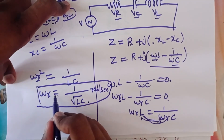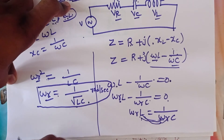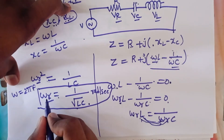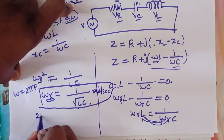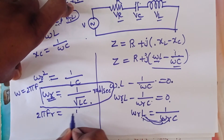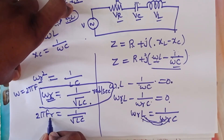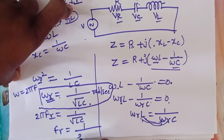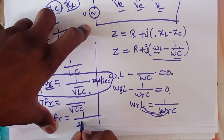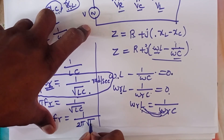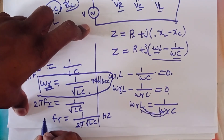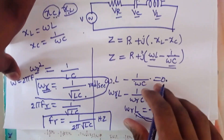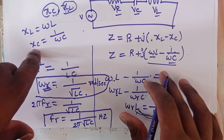Suppose we want to write this in terms of frequency in Hz. We know Omega_R equals 2·pi·F_R. Substituting gives 2·pi·F_R equals 1 divided by root(L·C). Moving 2·pi to the other side, we get F_R equals 1 divided by 2·pi·root(L·C), in hertz. This is another way of representing resonance frequency in a series RLC circuit. Thank you for watching this video.